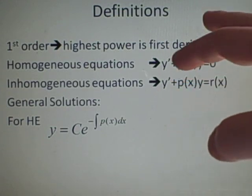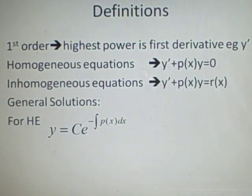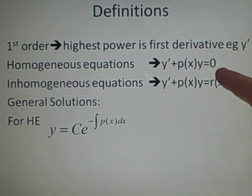So, if we have second-order, we'll have y double prime, but we're not going to do those yet. Inhomogeneous equations, that's when you have our homogeneous equation but equal to another function, r of x, which we don't know yet.